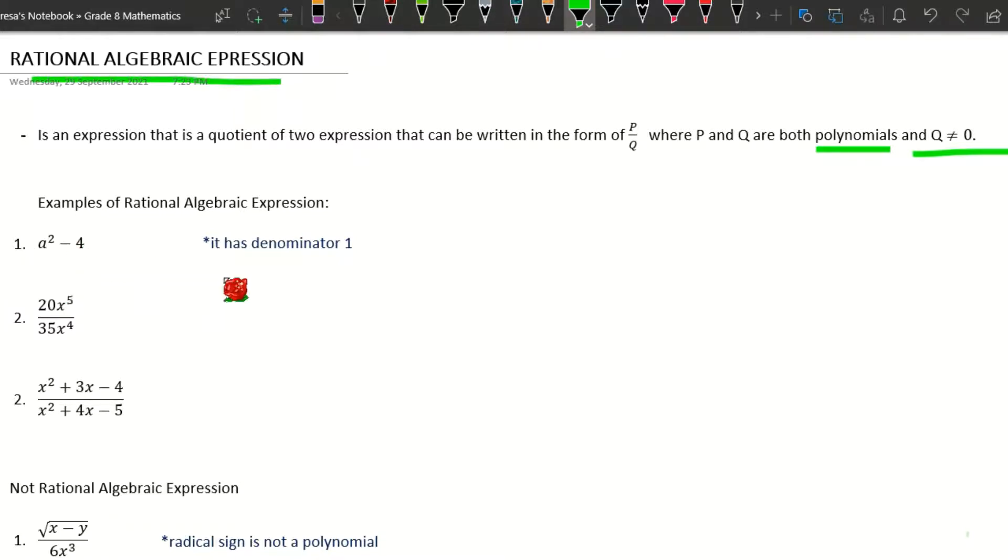Another, we have 20x⁵/35x⁴. So again, as I said earlier, when we see polynomial, it can be monomial or binomial or trinomial or other terms of polynomials.